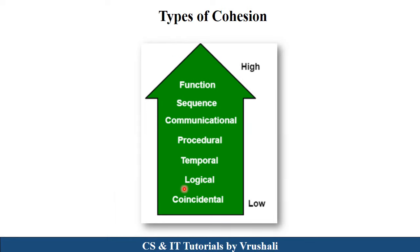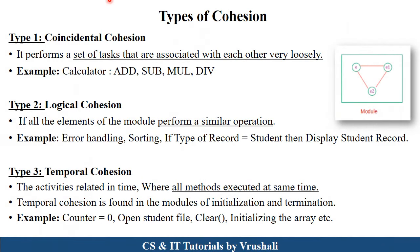There are seven types of cohesion. Functional cohesion is the highest and provides the best result; coincidental cohesion is the lowest. The first type is coincidental cohesion. Taking the example of a calculator, there are multiple tasks like addition, subtraction, multiplication, and division — but these tasks are not related with each other, or are very loosely related. This is called coincidental cohesion.